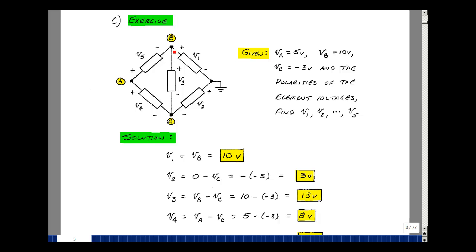Element three's voltage here would be v sub b minus v sub c, and that was 10 minus a minus 3, so that'd be 13.